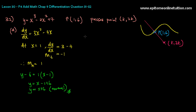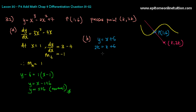Now let's have a look at part b — find the value of k. Obviously, they gave you this point (K, 2K), so you have to find something in relation to it. You have the equation of the normal line: y equals x plus 5. It passes through (K, 2K), so substitute it in: 2K equals K plus 5. Shift K over, so K is 5. Very simple.